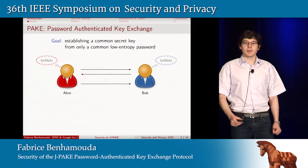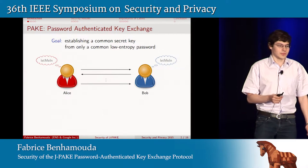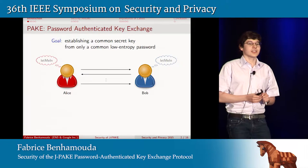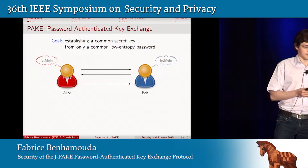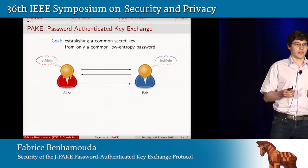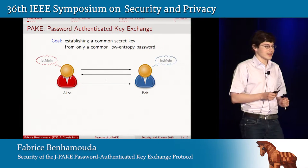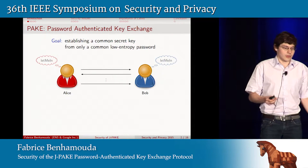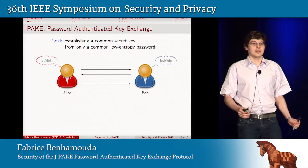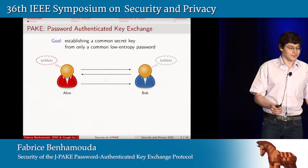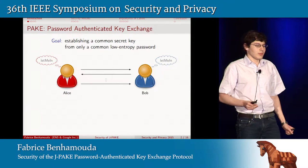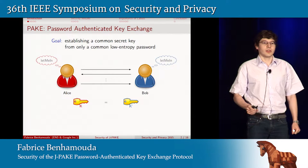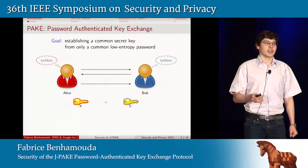The JPEG protocol is a PAKE protocol — a password authenticated key exchange protocol. It enables two users, Alice and Bob, who only share a common low-entropy password or even a four-digit PIN number, to generate a common secret key which is cryptographically secure.